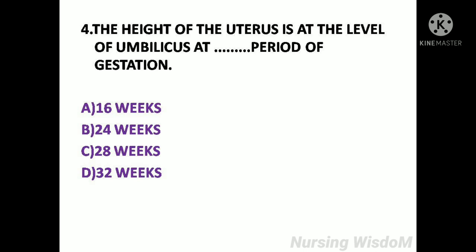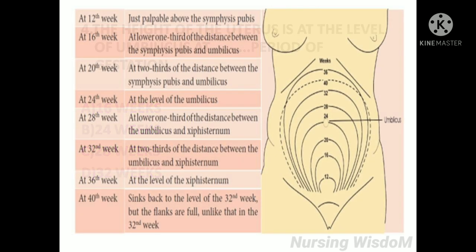Next question: The height of the uterus is at the level of the umbilicus at which period of gestation? Option A: 16 weeks. Option B: 24 weeks. Option C: 28 weeks. Option D: 32 weeks.